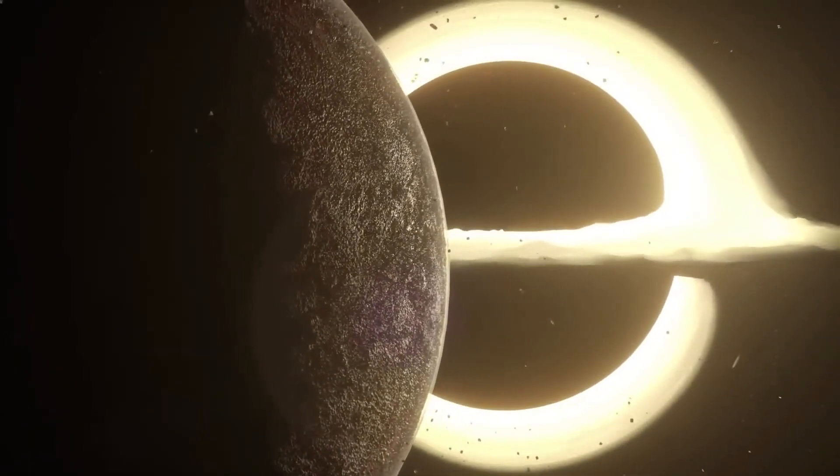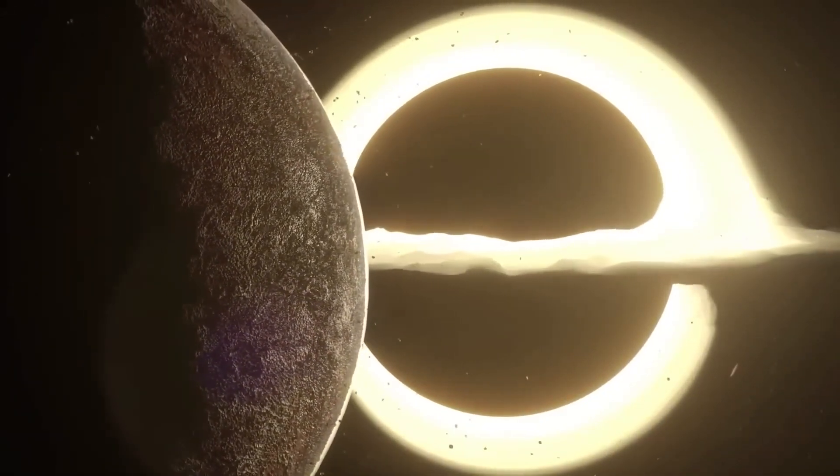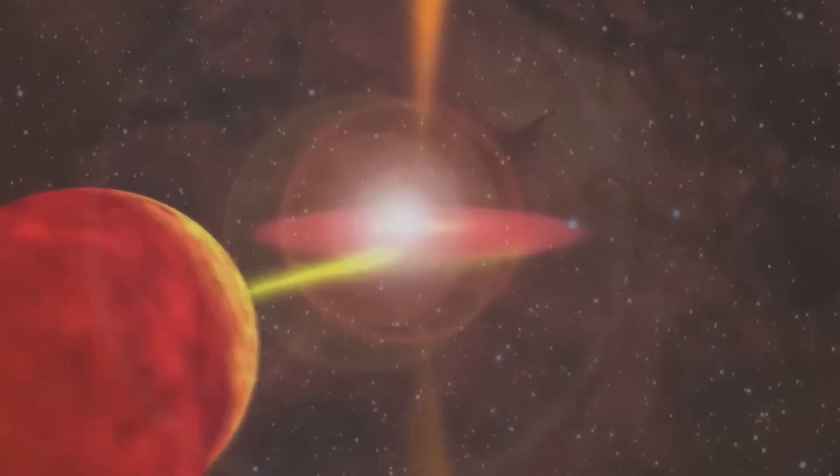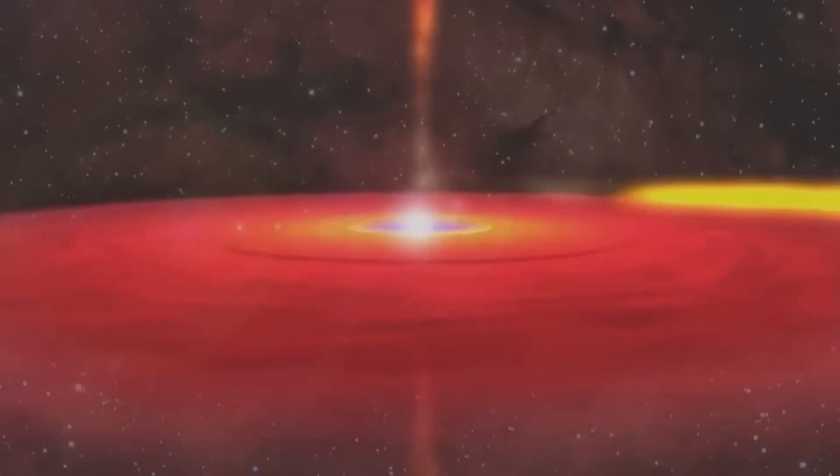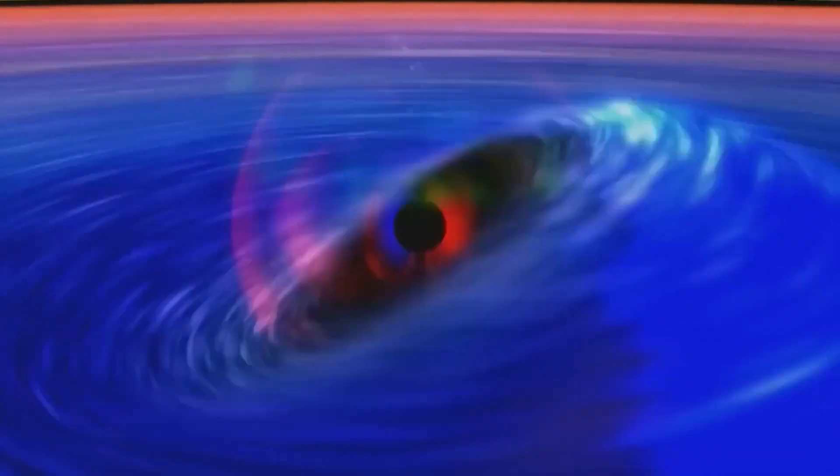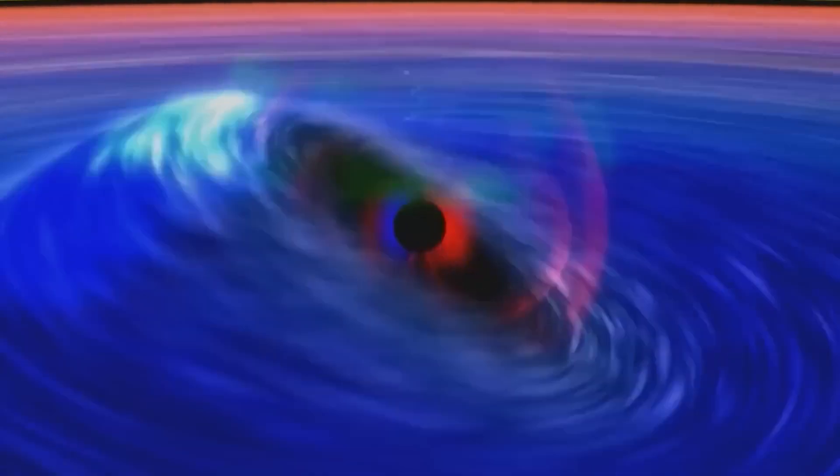Although black holes may be mysterious and elusive, their presence can be detected through the effects they have on surrounding matter. When a star orbits a black hole, its movement gets faster and faster as it gets closer, causing a change in its light that we can measure. This helps us determine the mass of the black hole.